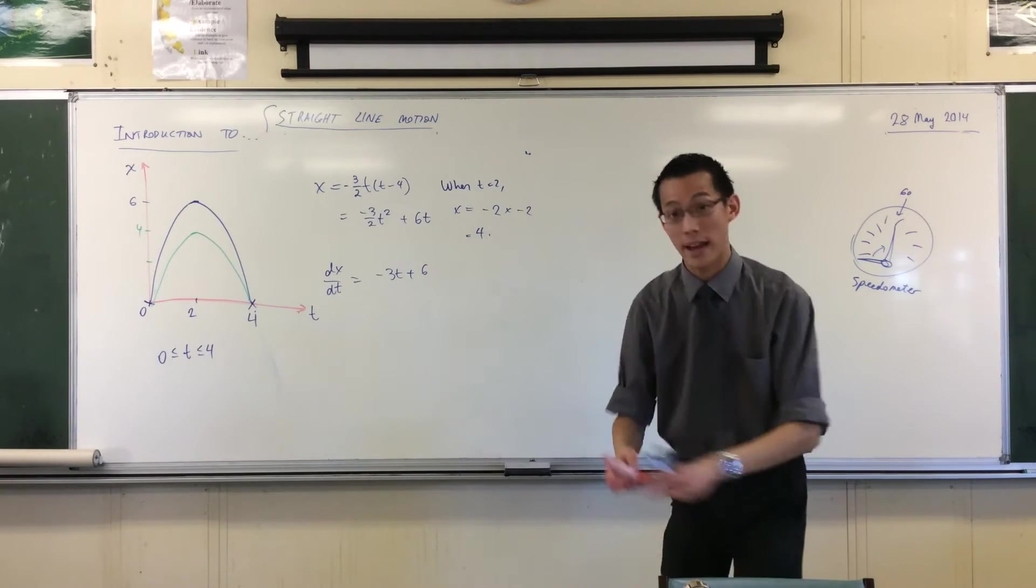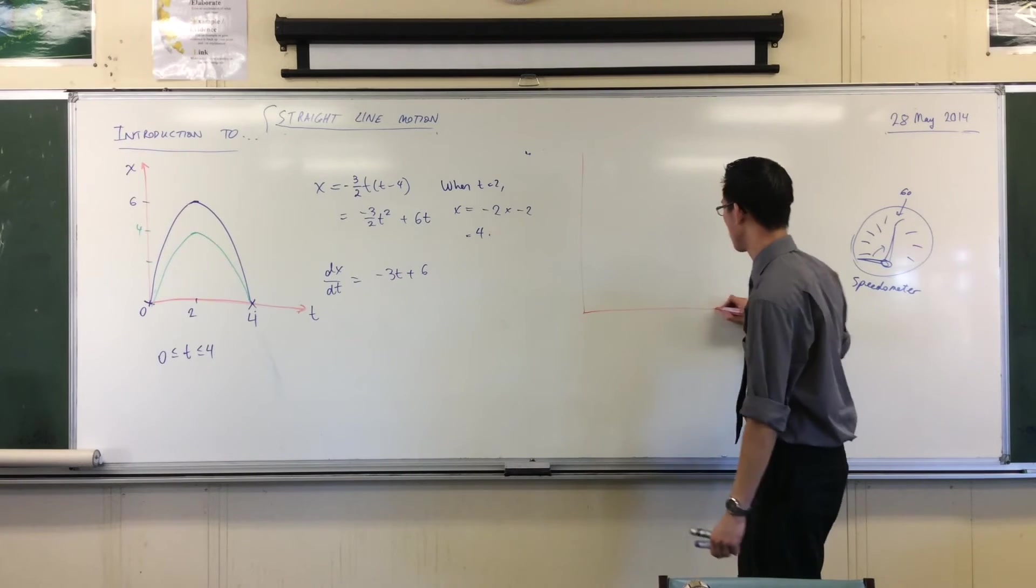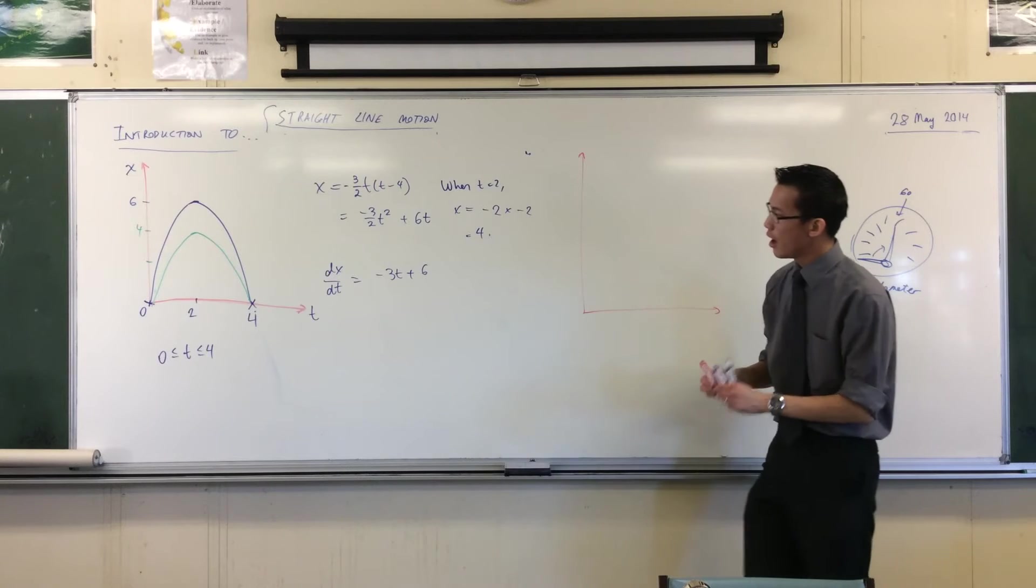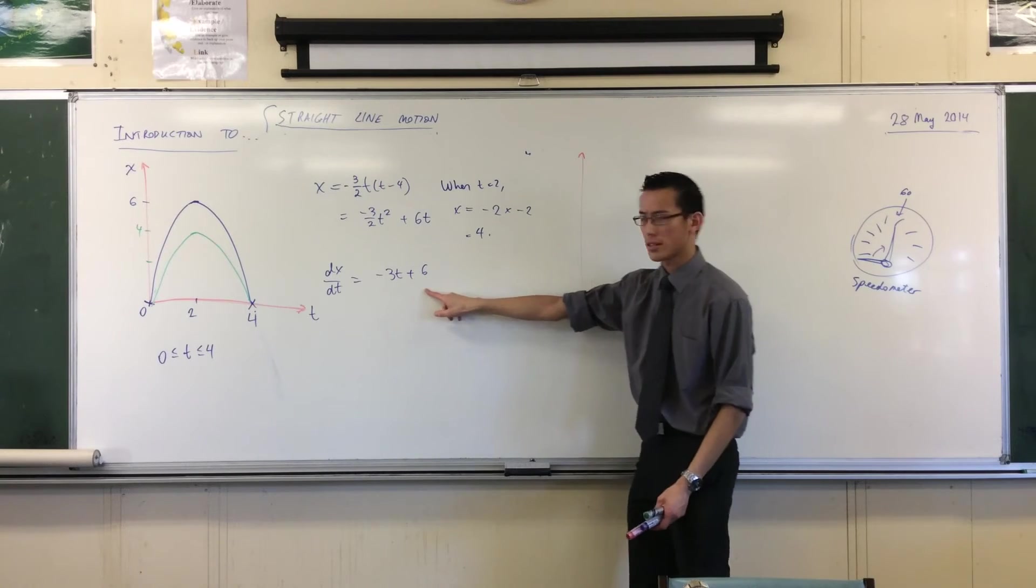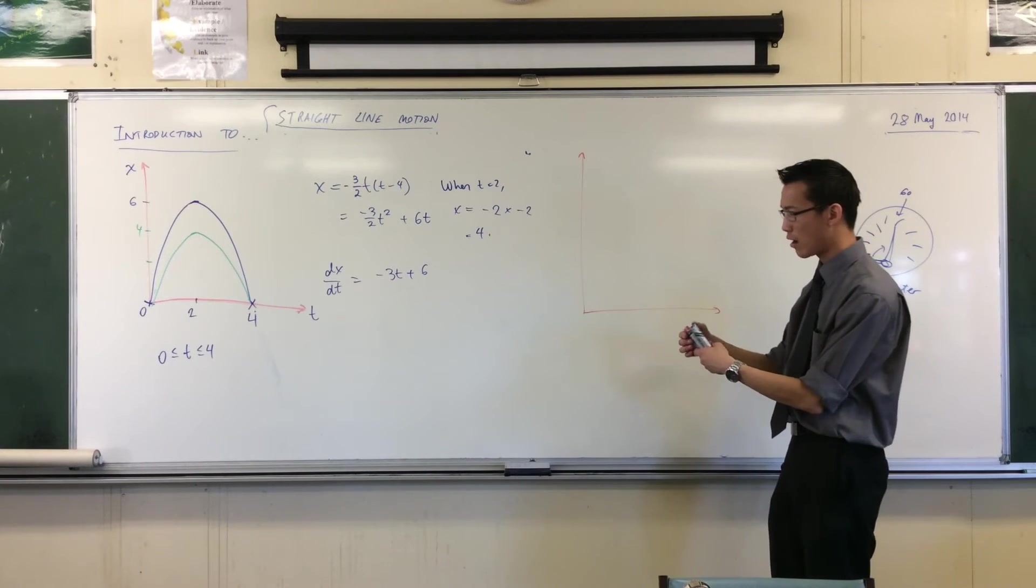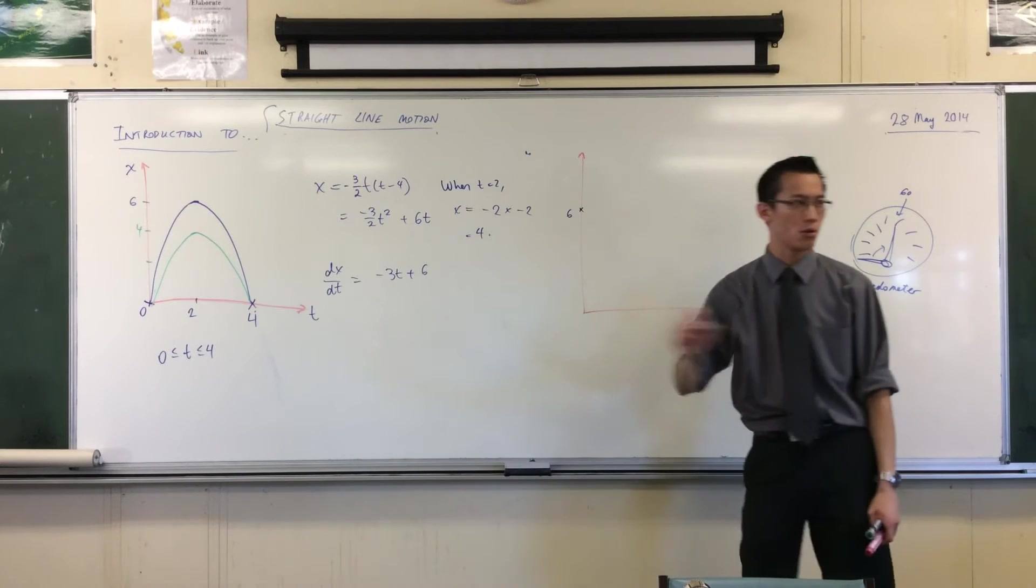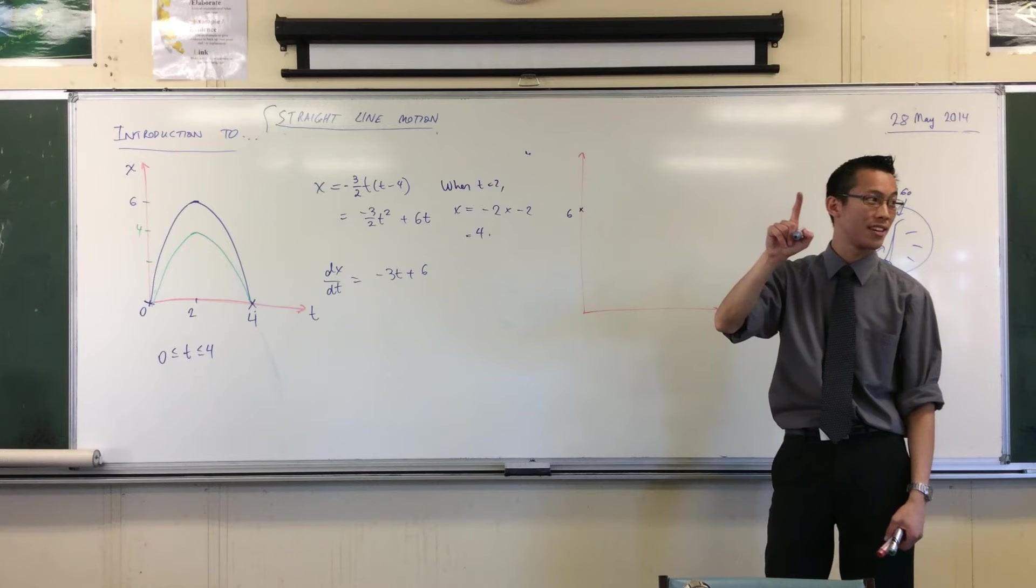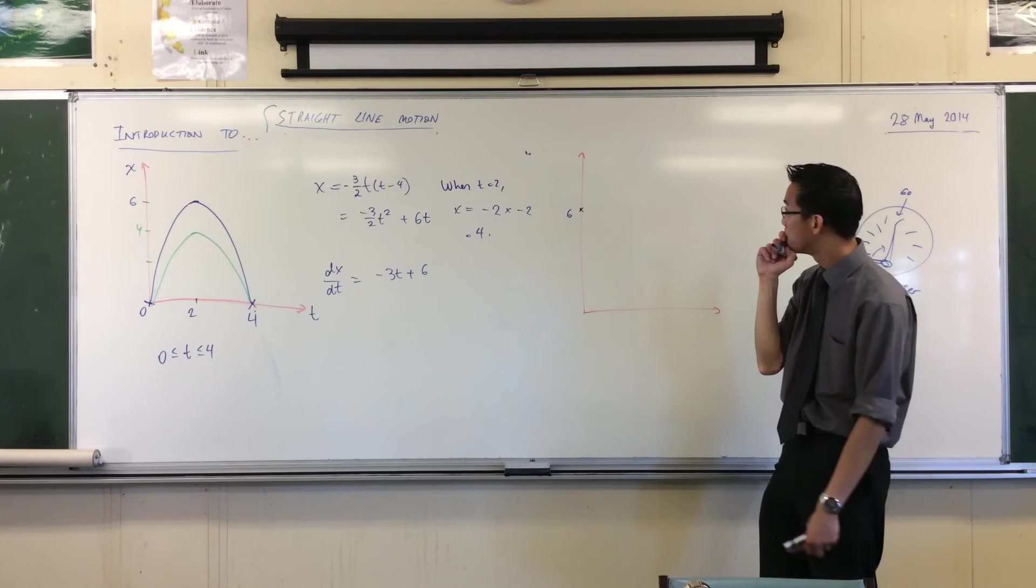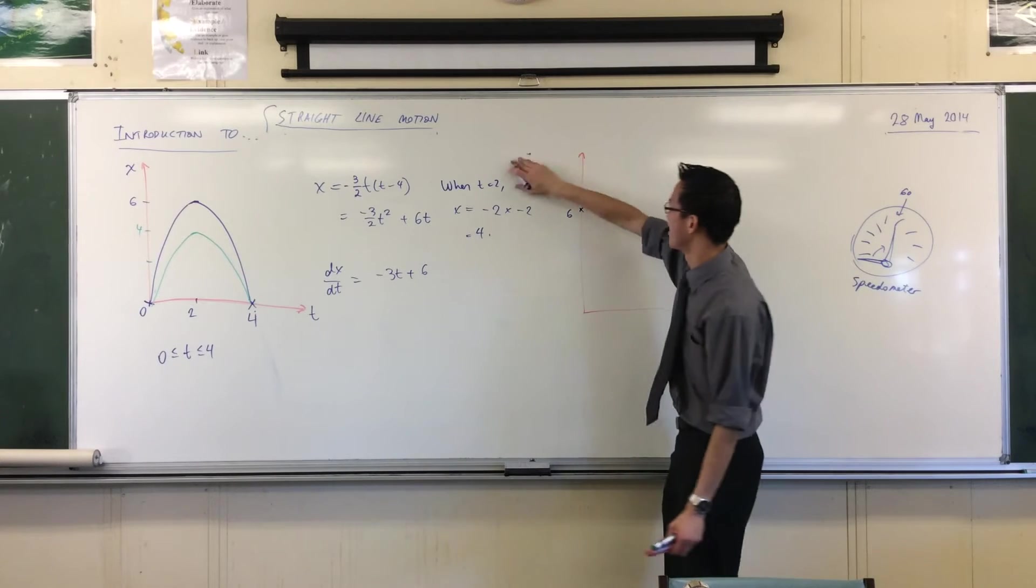Negative three t plus six, what does it look like? Well, you've got a y-intercept of six. Ooh, I was naughty, what did I miss? Axes. Axes, thank you.